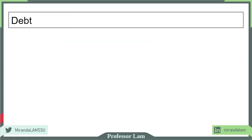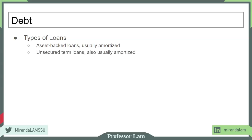Let's take a look in more detail at debt financing. There are different types of loans. One type is called asset-backed loans, which includes equipment loans and real estate loans. Most of these loans are amortized, meaning each payment includes both principal and interest. If you have a fixed-rate mortgage, the amount is fixed, and by the time you finish paying off the loan, you have paid off both the principal and the interest.